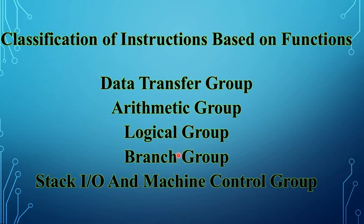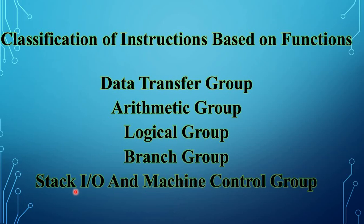The branch group alters normal sequential program flow. It includes unconditional and conditional jump, call, return, and restart instructions. The last group is stack I/O and machine control, which includes instructions for maintaining the stack, reading from input ports, writing through output ports, disabling and enabling interrupts, setting and clearing interrupt masks, as well as no-operation and halt instructions.